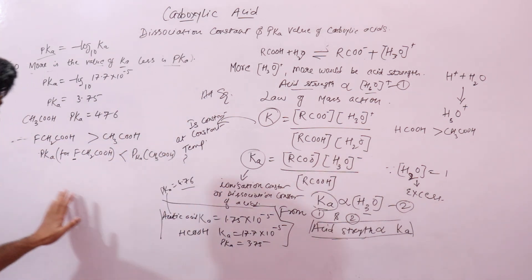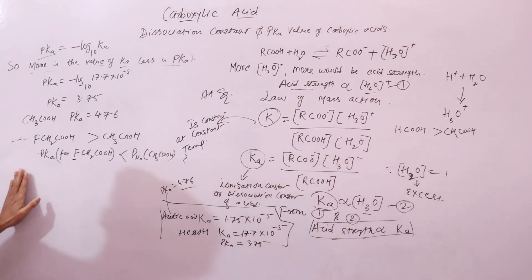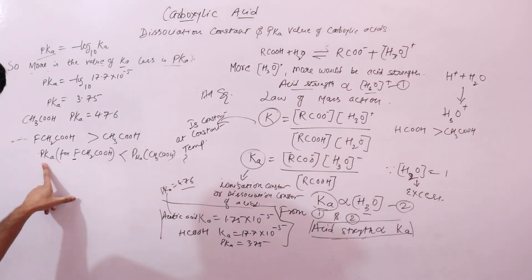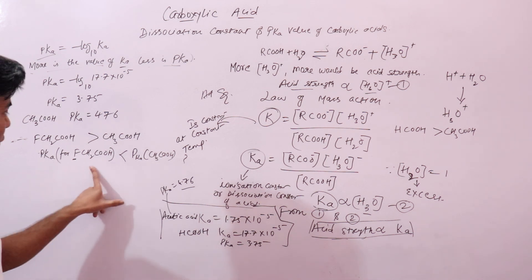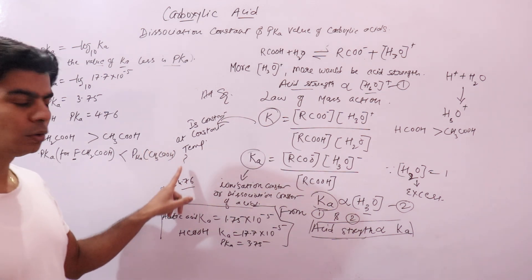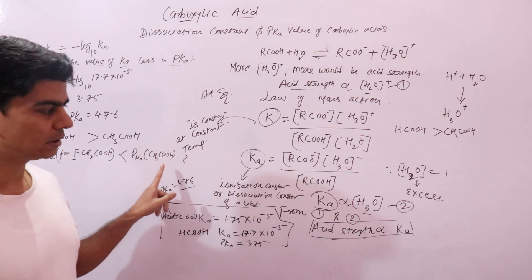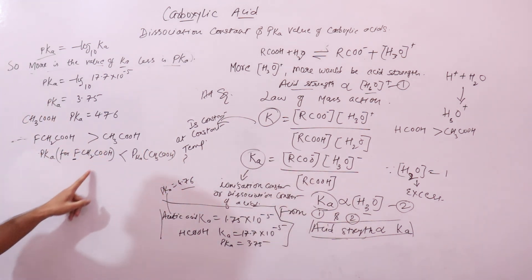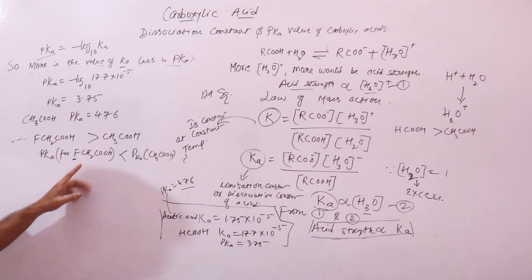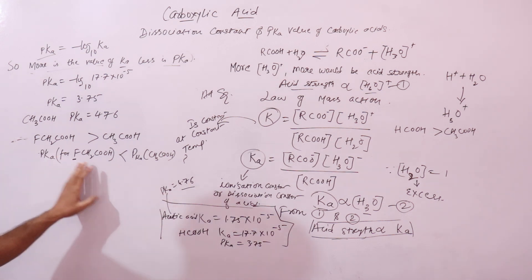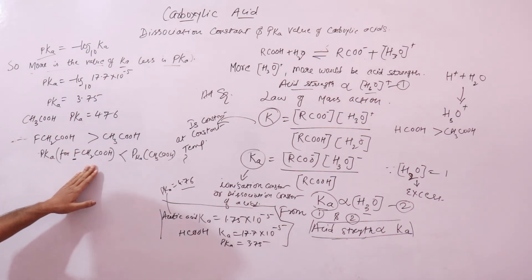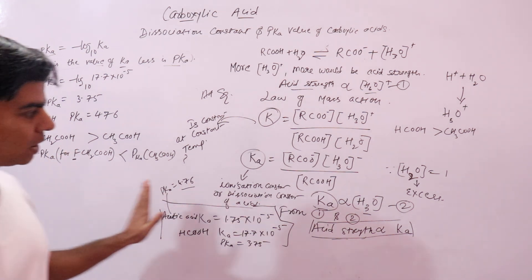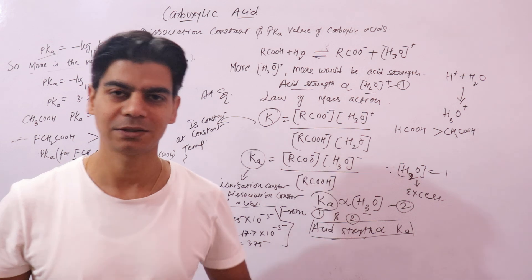Based on this, you may get exam questions like: why is pKa less for chloroacetic acid than for acetic acid? Because chloroacetic acid is a stronger acid — you need to explain why it is stronger. I hope this is clear. Thanks.